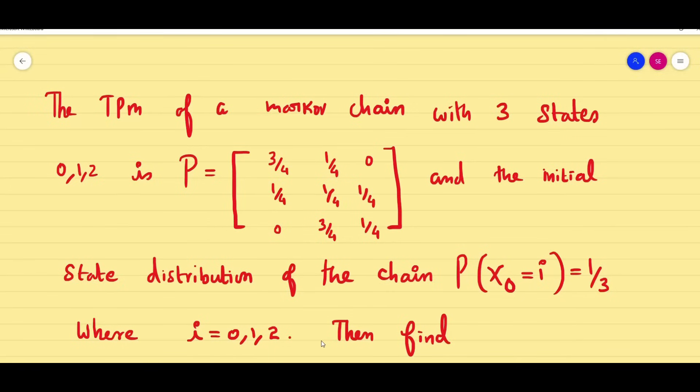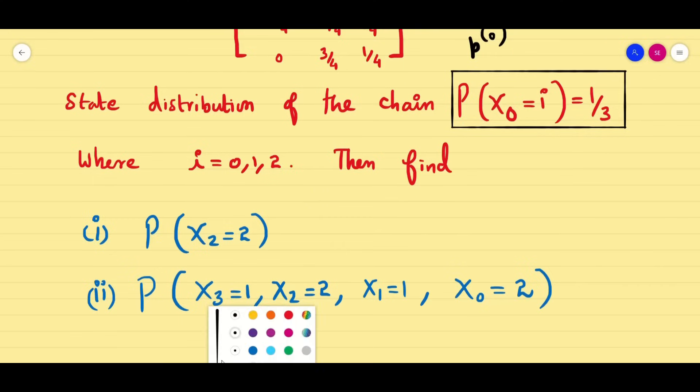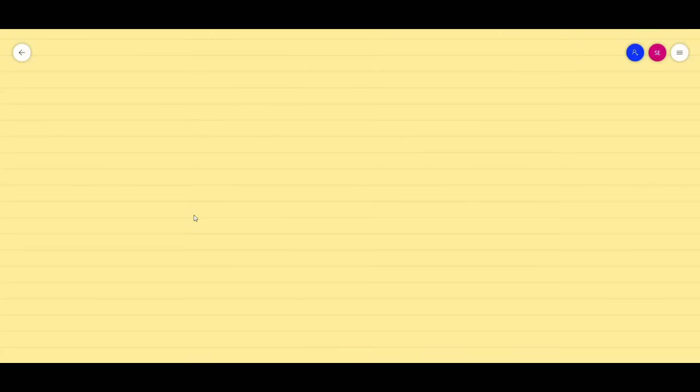Dear students, I am very happy to meet you with the new problem. In this problem, the transition probability matrix is given (TPM) for a Markov chain with three states. The states are mentioned very specifically as 0, 1, 2, and the matrix capital P and the initial state distribution is given in terms of some equation. From this, we are going to generate P0, find a simple probability, and then sequence of probability. Why I chose this problem is because it has some reason.